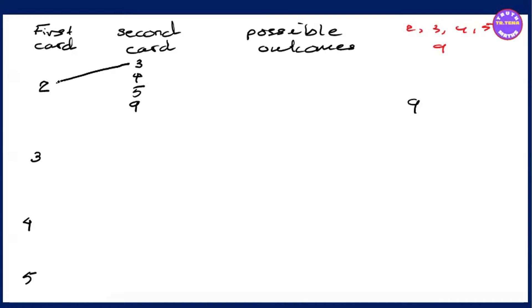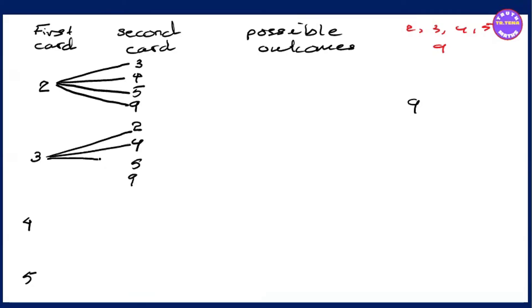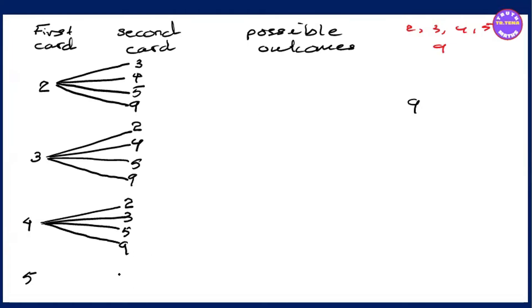This is the tree diagram. This is the 3 diagram: 2, 4, 5, 9. This is the 4 diagram: 2, 3, 5, 9. This is the 4 diagram and the 5 diagram.